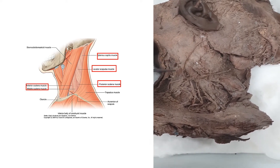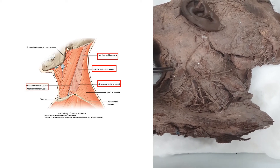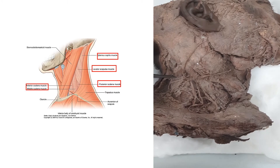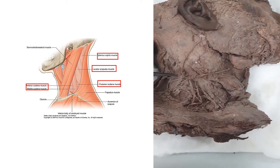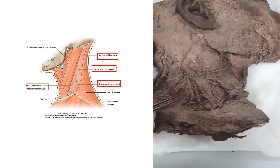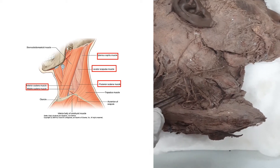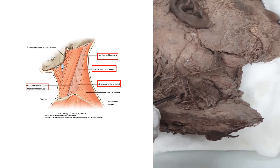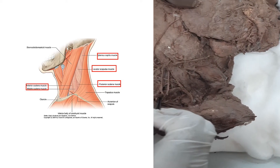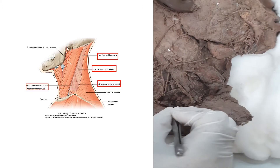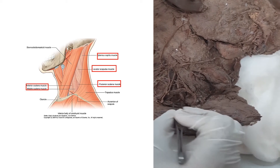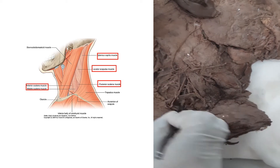After splenius capitis, we have the levator scapulae muscle, then the scalenus posterior muscle, and just beneath the scalenus posterior we also have the scalenus anterior muscle.